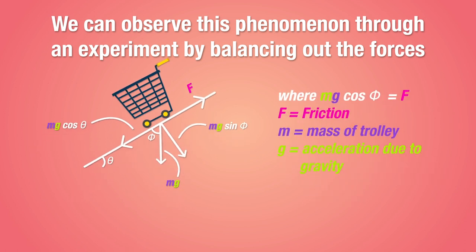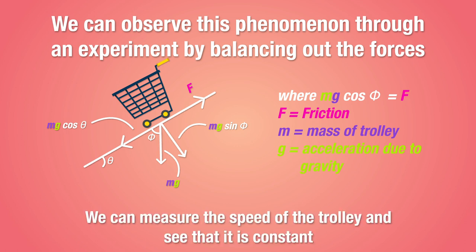Now since the force of friction is balanced out by the force of gravity on the incline, when you push the trolley, it will slide down at a constant speed. That's something the measurement device will actually show you in numbers. Since there's no net force acting on the trolley, the initial speed it gets when it's pushed is the speed that it will maintain throughout.